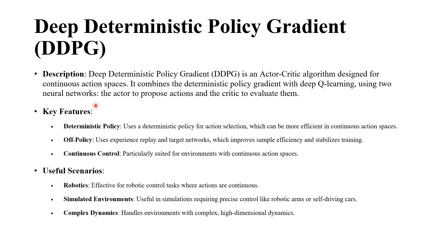DDPG uses two neural networks: the actor to propose actions and the critic to evaluate them. Key features: it uses a deterministic policy for action selection, which can be more efficient in continuous action space. It's off-policy, so it uses experience replay and target networks, which improves sample efficiency and stabilizes training. It is particularly suited for environments with continuous action space.